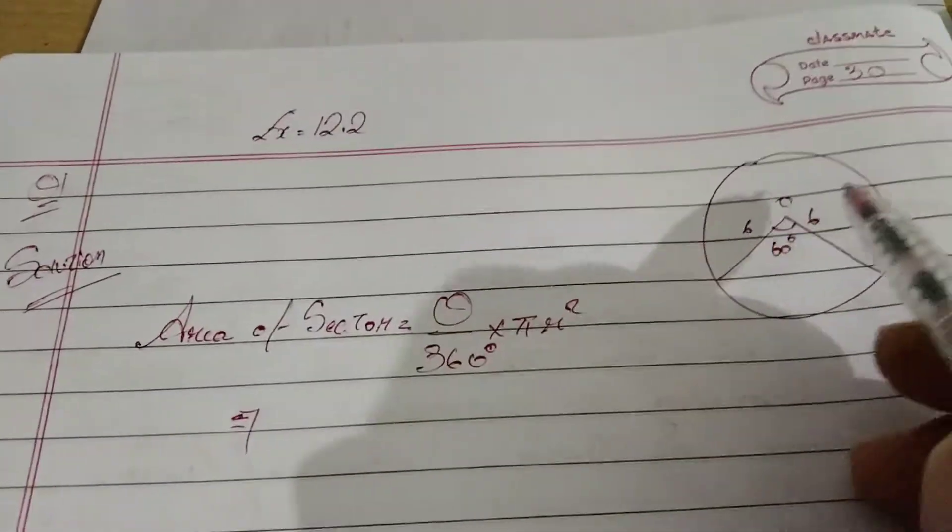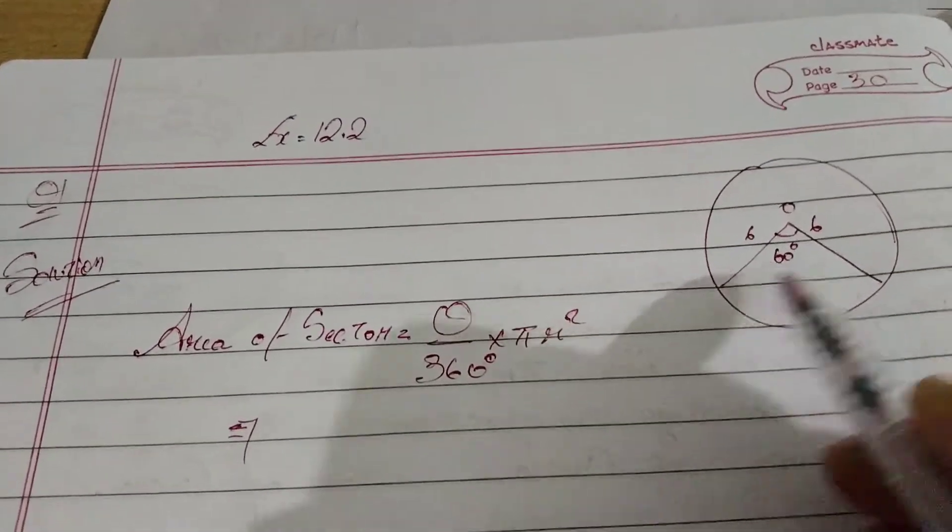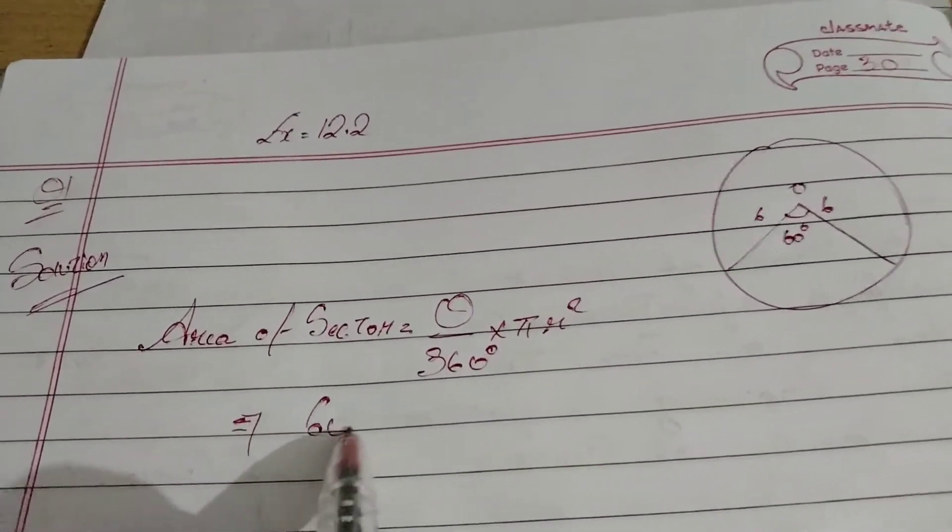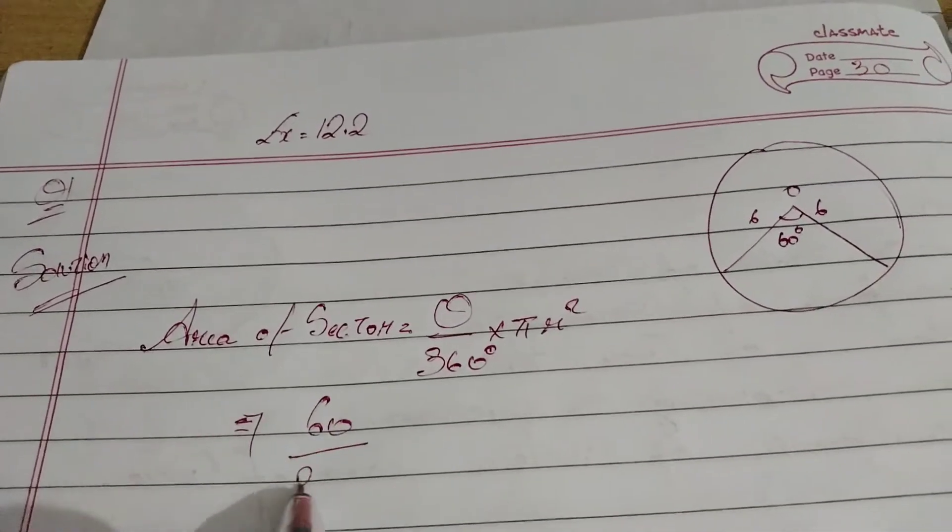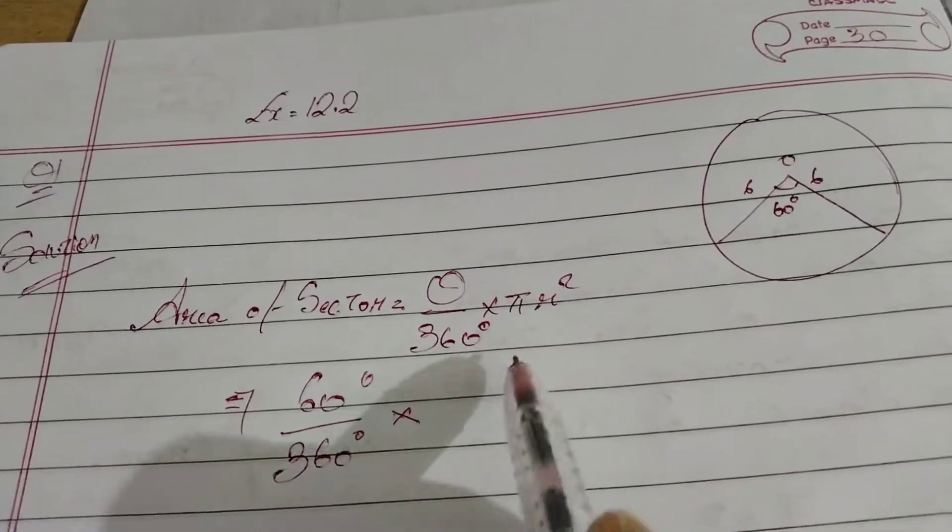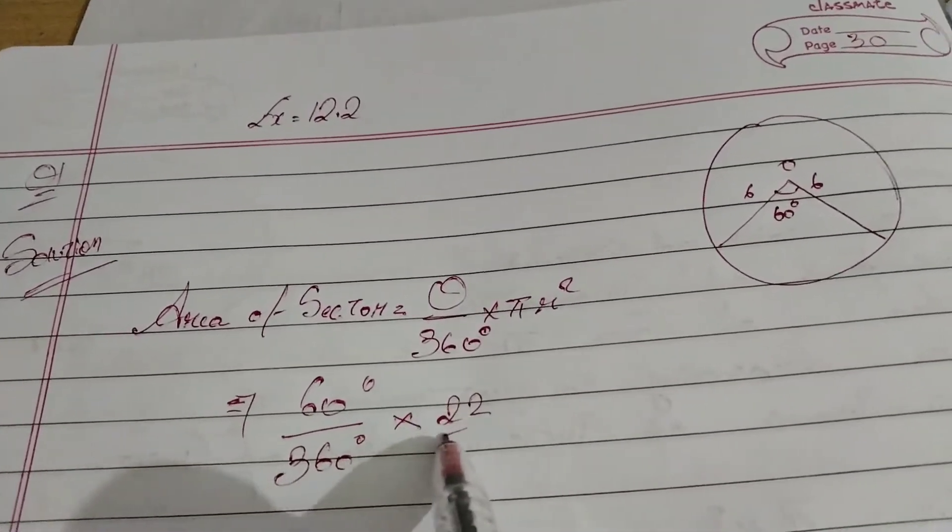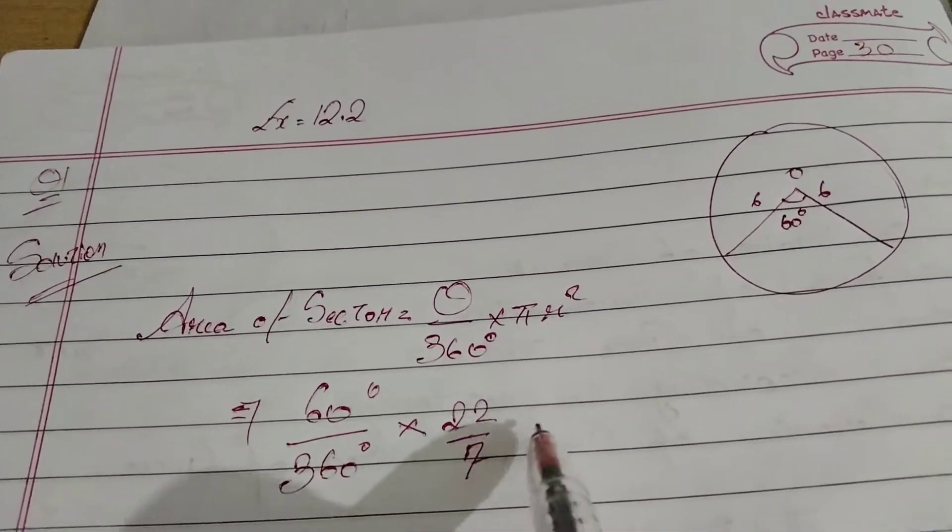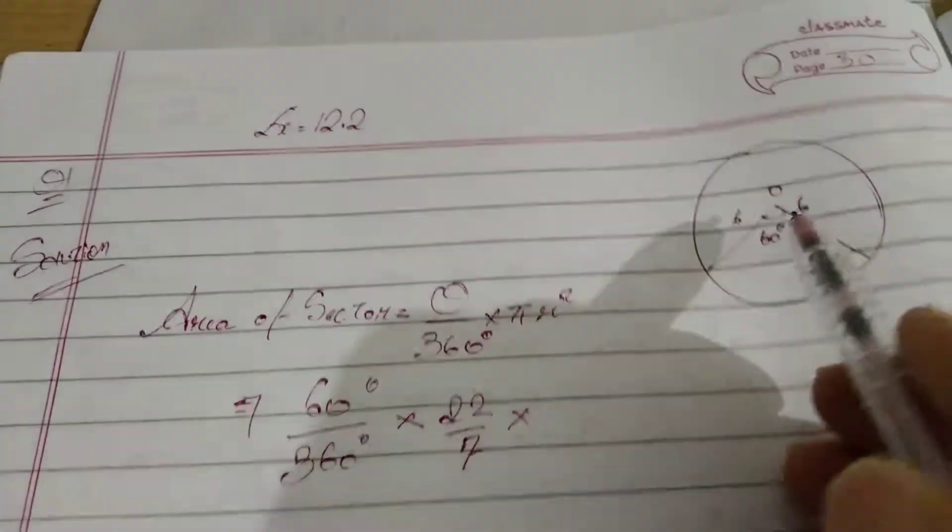So theta is 60 degrees. Theta is 60 by 360 degree into pi is 22 by 7 into radius is 6, so 6 square, r square, so 6 into 6.